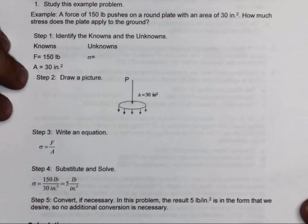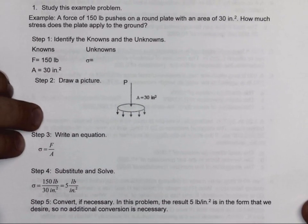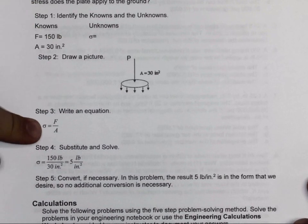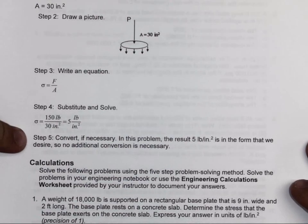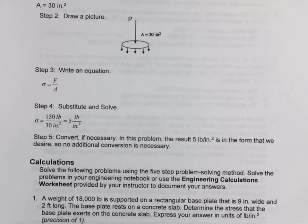The first step is identifying knowns and unknowns. Step two is drawing a picture. Three, and sometimes I interchange these, step three is writing an equation. Four is substituting and solving. And five is maybe doing a conversion if necessary, but most of the time it's documenting the final answer.